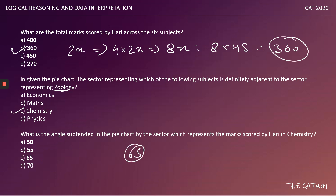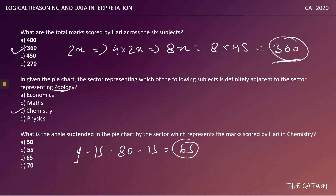Question 3: What is the angle subtended in the pie chart by the sector representing chemistry? Total marks = 360 and Harri's marks in chemistry = y − 15 = 65. Since the total marks equal 360 and the pie chart totals 360°, the angle for chemistry = 65°. The answer is option C. With this, the set is solved — I hope it's clear. Thanks for watching!